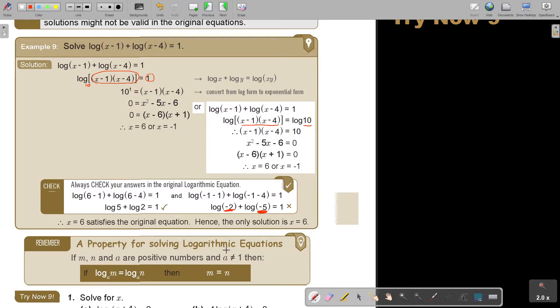Now, what is the property for solving logarithmic equation? If M and N are positive numbers and A is not equal to 1, the base, then if I have 1 term equals 1 term, 1 log word, 1 log word, I can take the log words away and I can just put M equal to N. That's the principle.